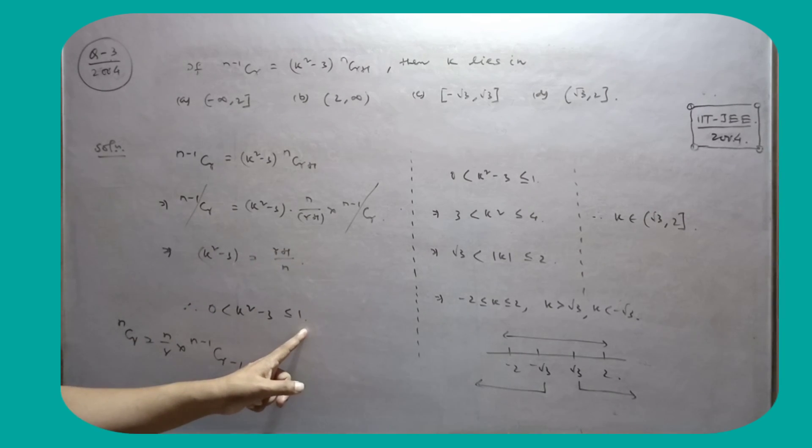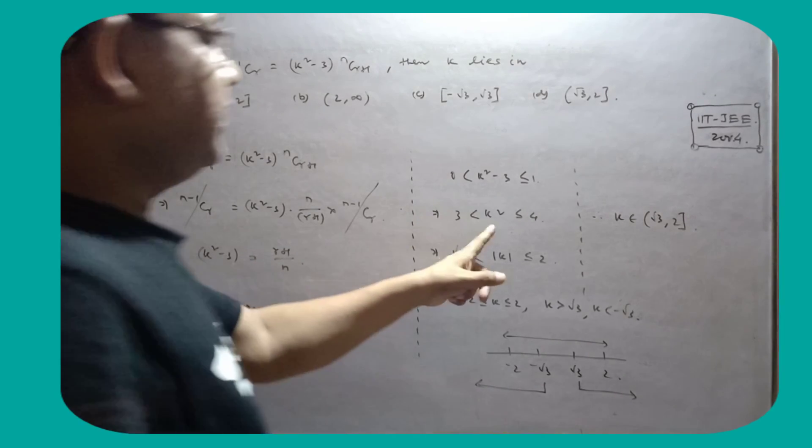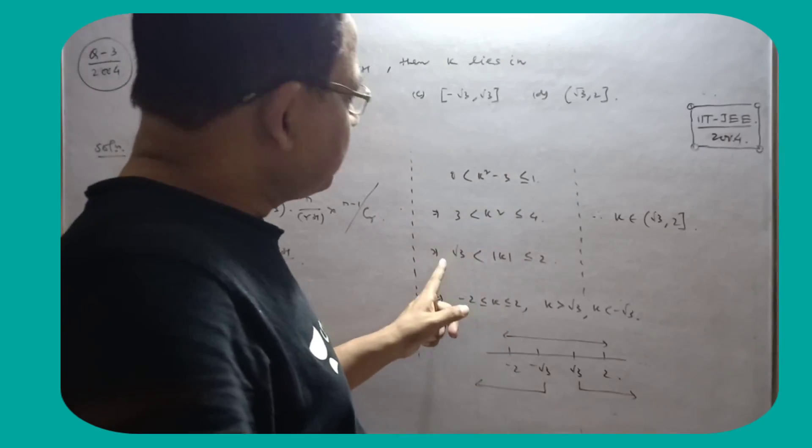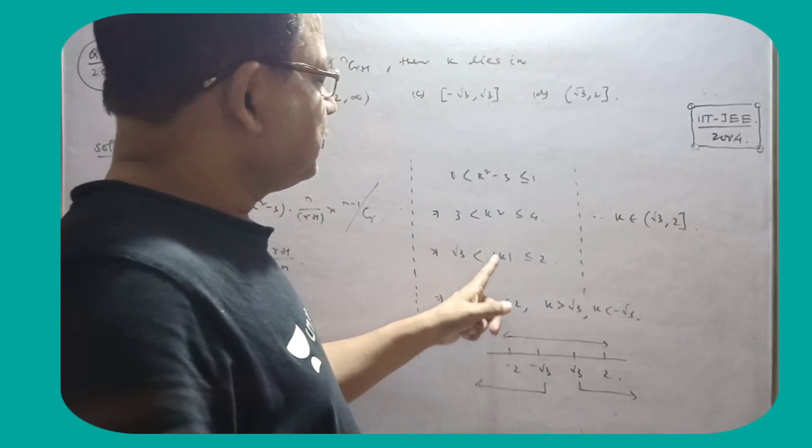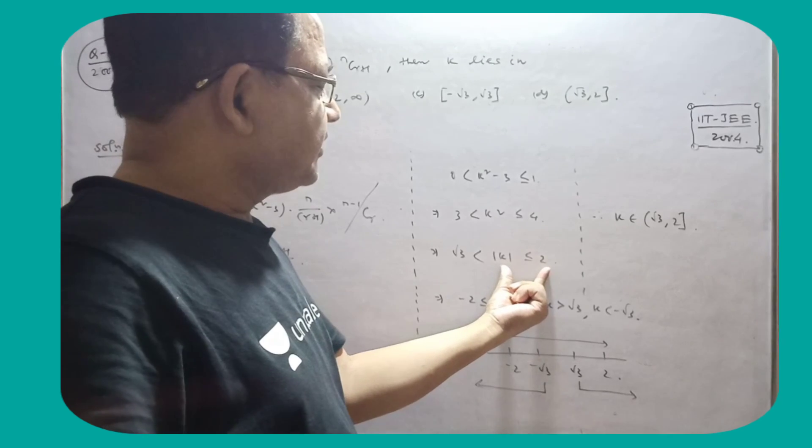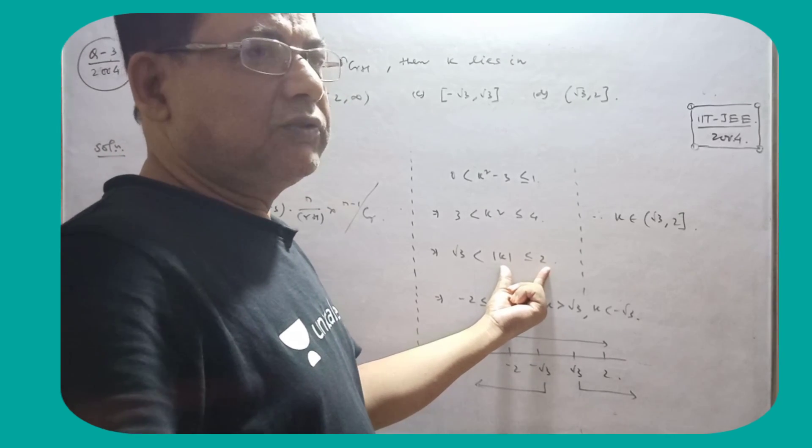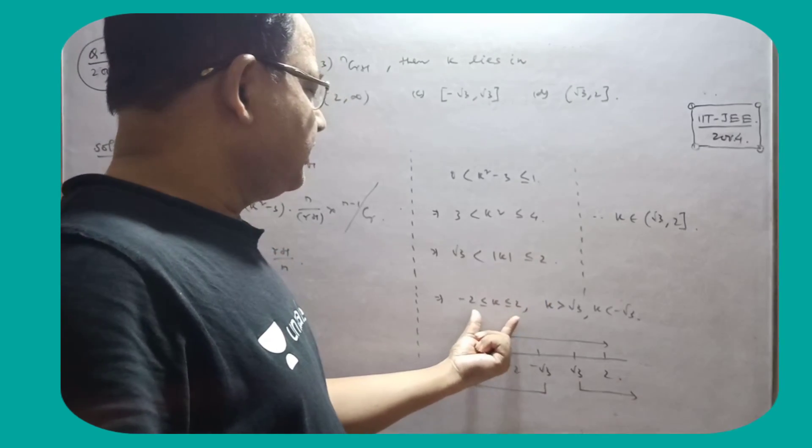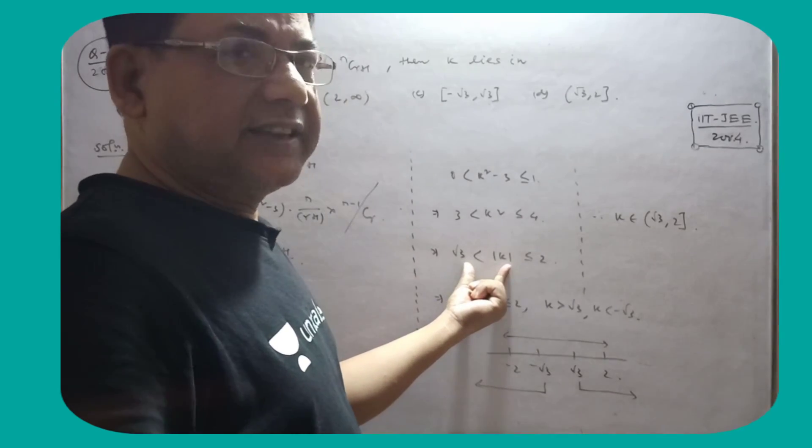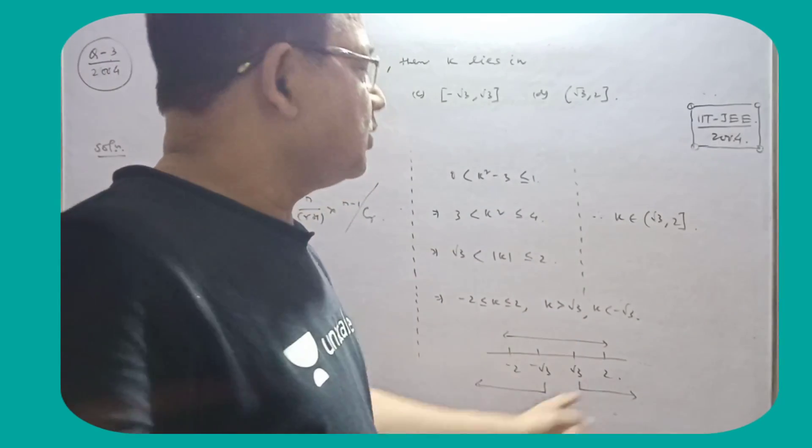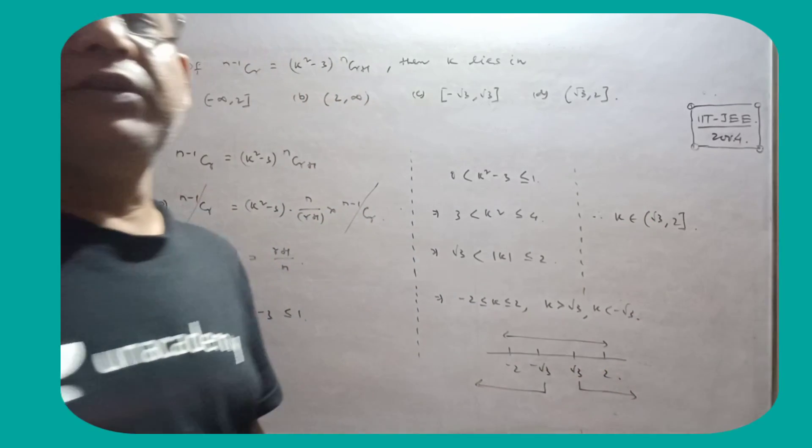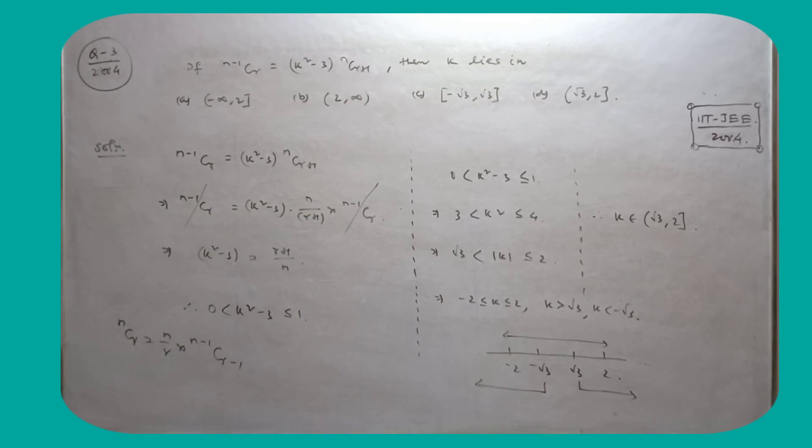These values, this is positive and this value is always less than or equal to one. So that means you have got this. Take root: root three modulus of k is 2. Modulus of k is less than or equal to 2, this range. Modulus of k is greater than 3, so this value. The common value is k belongs to root three to two.